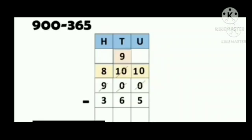900 minus 365. First of all, write the numbers: 9 in the hundreds place, 0 in the tens place, and 0 in the units place. Now let's subtract. 0 minus 5 — is it possible to subtract 5 from 0? No. So let's go to the tens place. The tens place also has 0. So we have to go to the hundreds place, which has 9.